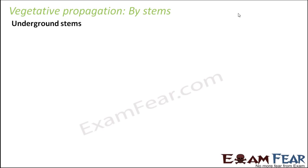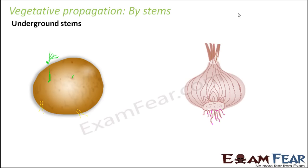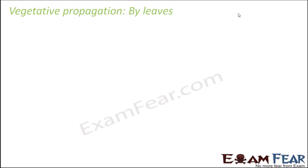The next modification of stem is the underground stem. Normally stems are above the ground, but there are some specialized stems which grow below the ground, and these stems can also give rise to new plants. Examples of underground stems include potato and onion.